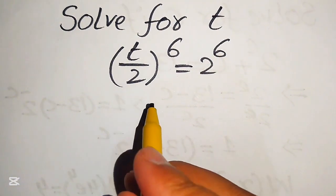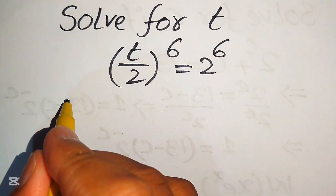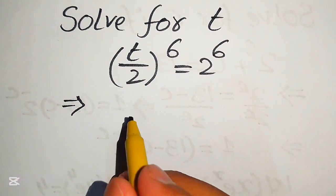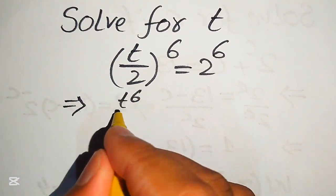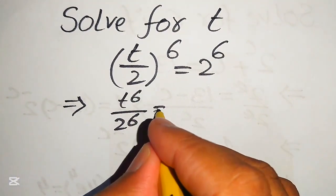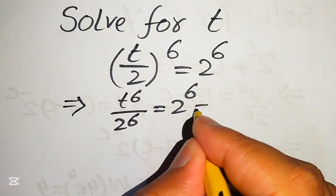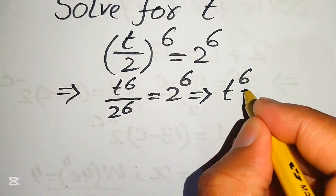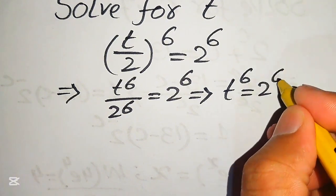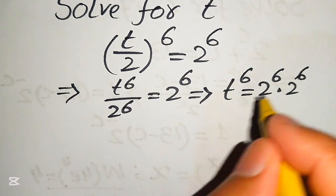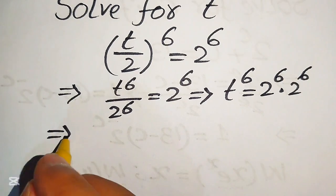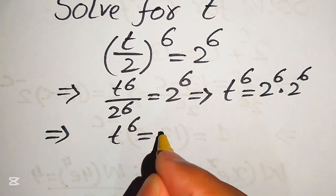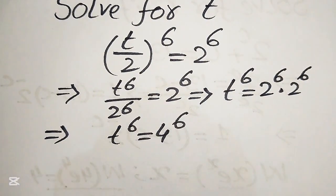We move forward to the solution of this problem. First we apply the 6th power on both terms, and it will be written as t to the power of 6 divided by 2 to the power of 6 equals 2 to the power of 6. Now we move the 2 to the power of 6 to the right-hand side, giving t^6 equals 2^6 multiplied by 2^6. Combining the exponents, we get t^6 equals 4^6.